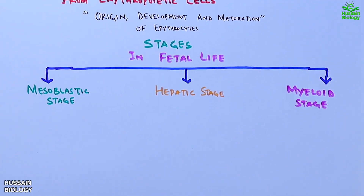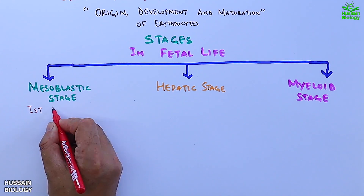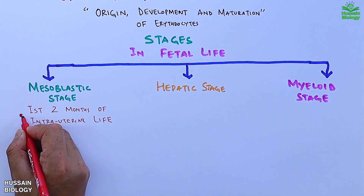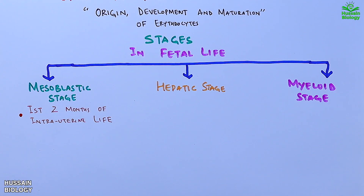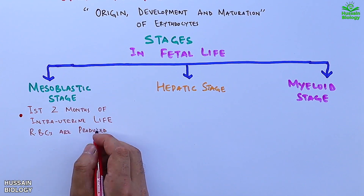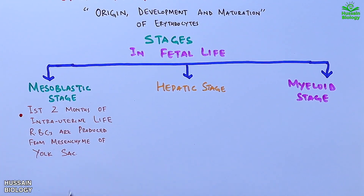The mesoblastic stage lasts for the first two months of intrauterine life — that's during pregnancy — where RBCs are produced from the mesenchyme of the yolk sac, that's in blood islands.